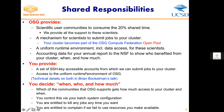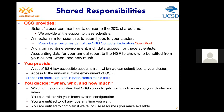You decide which of the communities that OSG supports gets how much access to your cluster and when — you control this via your batch system configuration. If you want to give multiple communities accounts in ways that you can dial up and down their relative priorities at any moment in time, you simply provide multiple accounts, one per each community, and your batch system controls their relative priorities. We do the plumbing.